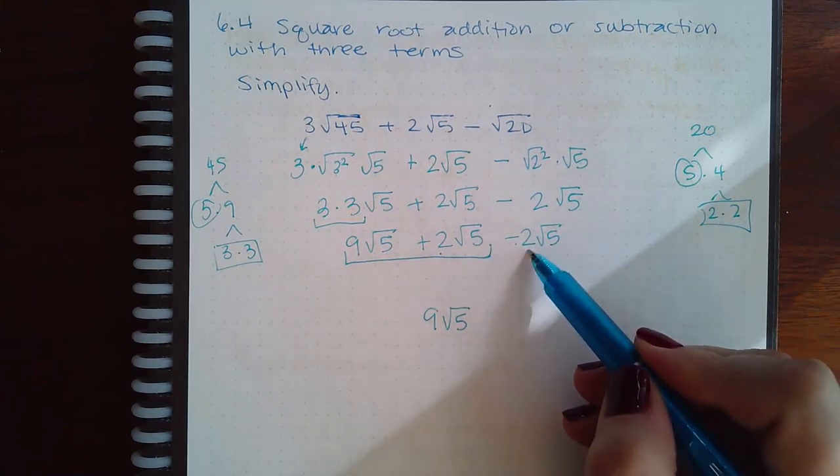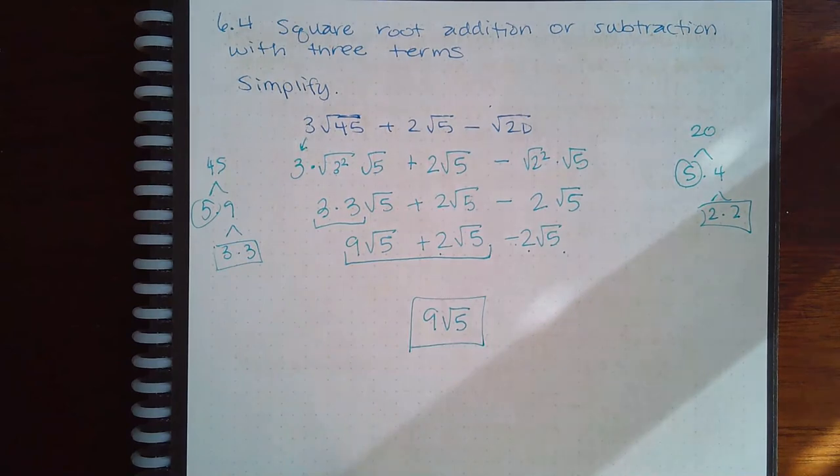And then if I take away 2 of those square root of 5s, I still end up with 9 square root of 5. Remember that when you're adding and subtracting, you should go from left to right.